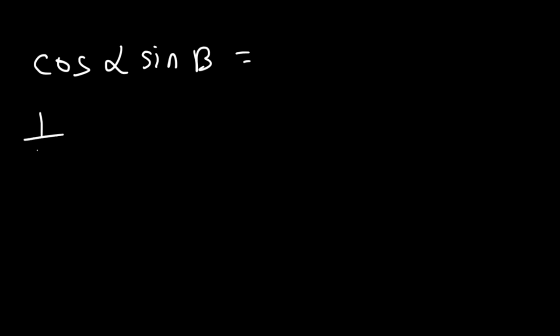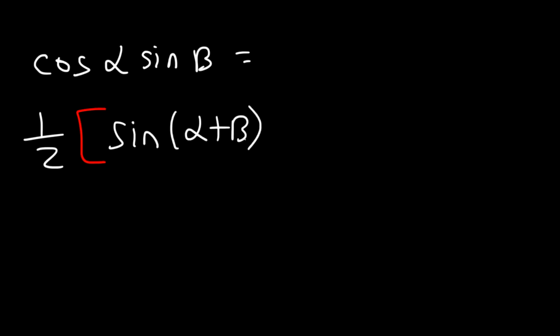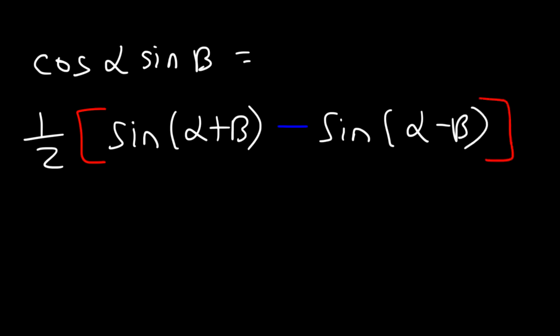And finally, the last one you need to know is cosine alpha sine beta, which is equal to one half times sine(alpha plus beta) minus sine(alpha minus beta). So those are the four equations that you need.